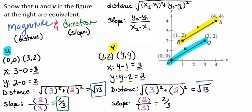So we see that vector v has a magnitude of the radical 13 and a direction of 2 thirds. We can compare vector u and vector v and see that they have the same magnitude and the same direction. Hence, we have shown that vector u and vector v are equivalent.